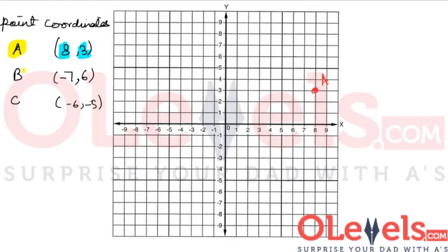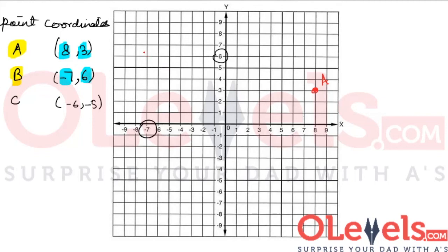Now let's try to plot point B. Point B has an x value of minus 7 and a y value of 6. This is minus 7 on the x-axis, and this is 6 on the y-axis. So right here is where point B will be plotted. Let's label this point B.